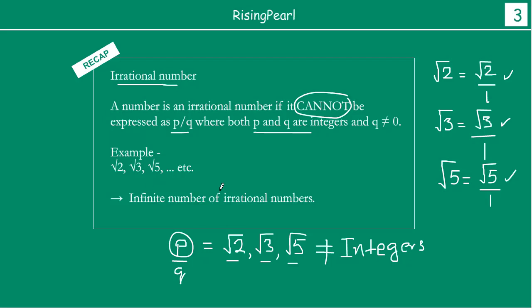It is also important to note that there are an infinite number of irrational numbers. We have infinite integers, and in episode 2 we saw there are infinite rational numbers between any two integers. Now we are seeing there are also infinite irrational numbers, because if we write irrational numbers as square roots of prime numbers, there are infinitely many prime numbers that can be represented.